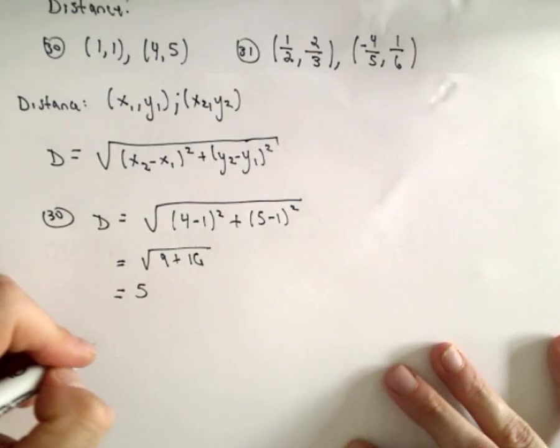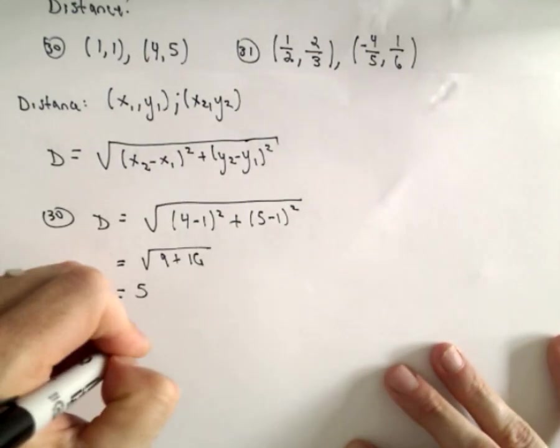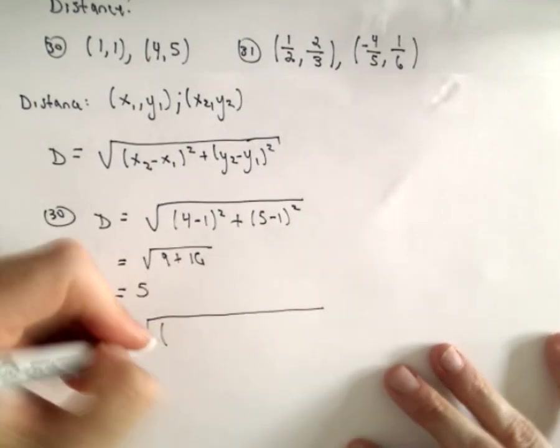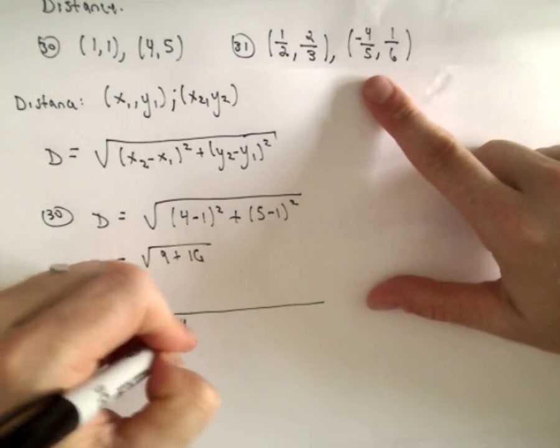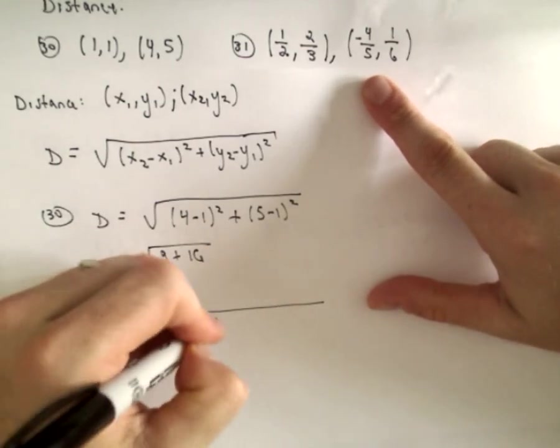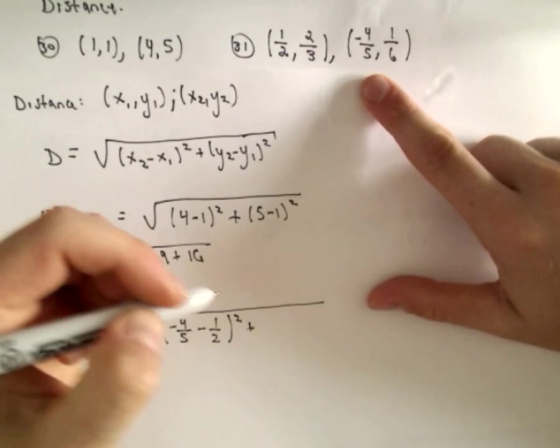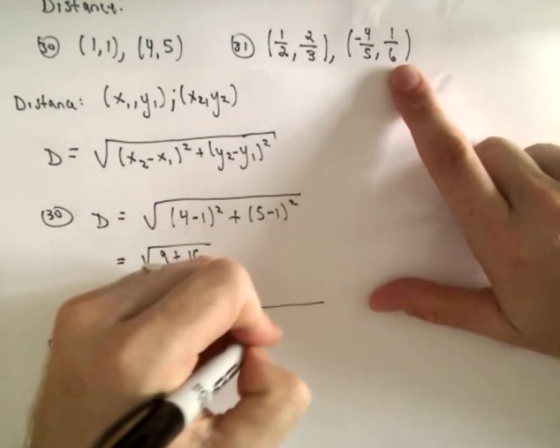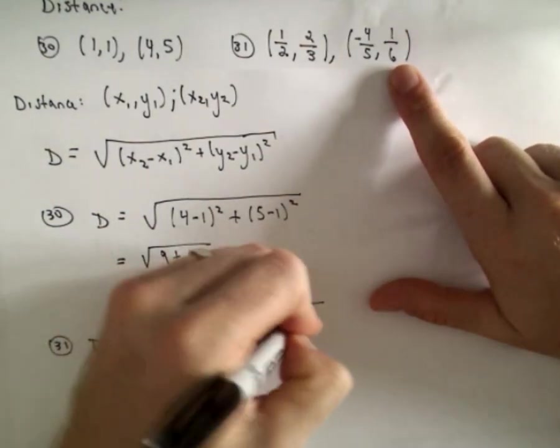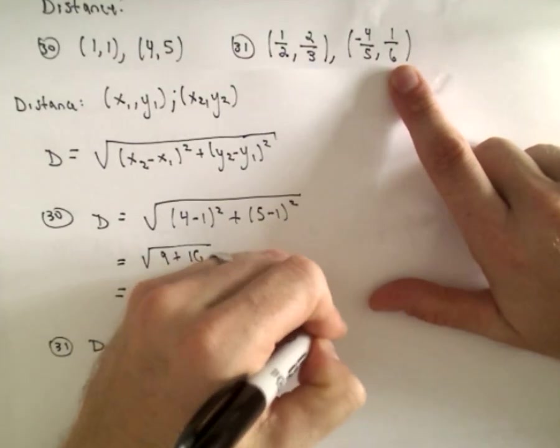Okay, so for 31, the only thing that's a little worse is just fractions. So we've got negative 4 fifths minus 1 half quantity squared plus, let's see, now we've got 1 sixth minus 2 thirds quantity squared.